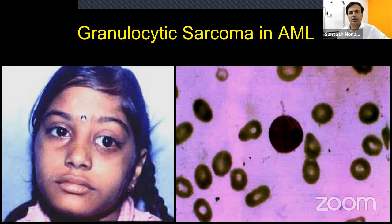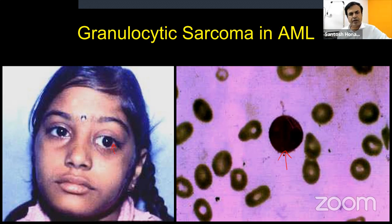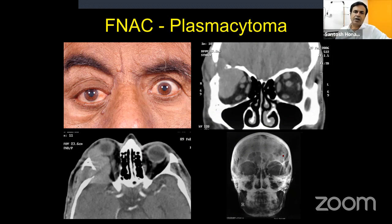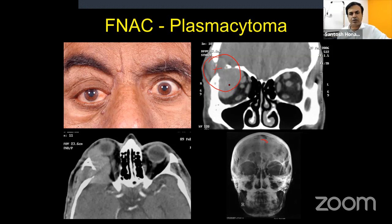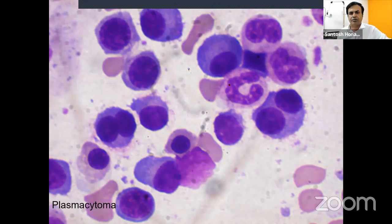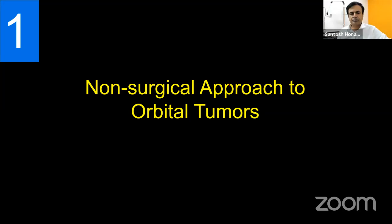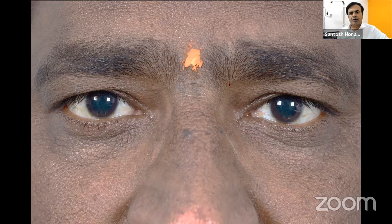A child with unilateral proptosis, subconjunctival hemorrhage, roth spots on fundus, and a peripheral blood smear showing AML with granulocytic sarcoma — again, no surgery. A patient with prior multiple myeloma, punched-out skull lesions, and a tri-radiate lesion suggests plasmacytoma; confirm by fine needle aspiration cytology and refer to oncology. Non-surgical approaches to orbital tumors are also important.